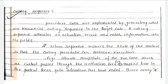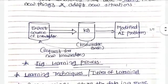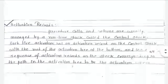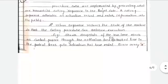Function calls are implemented by generating what are known as calling sequences in the target code. A calling sequence allocates an activation record and enters information into its fields. A return sequence restores the state of the machine so that the calling procedure can continue execution. The following figure shows a snapshot of the runtime stack as control passes through the activation function tree.